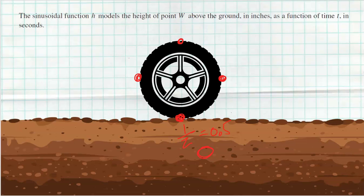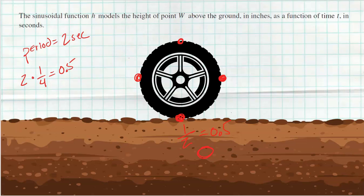We already figured out that one full rotation takes two seconds, so each quarter of the cycle is half a second. Starting at 0.5 seconds at ground level (zero inches), the first quarter point happens half a second later at one second, and at that point W is nine inches above the ground — at the radius level.